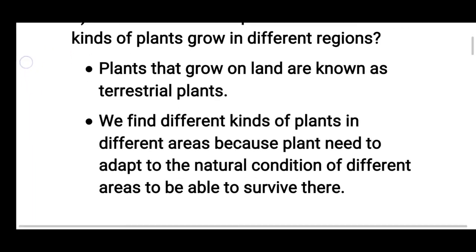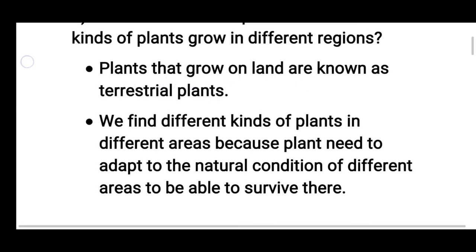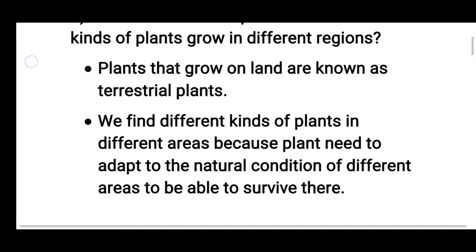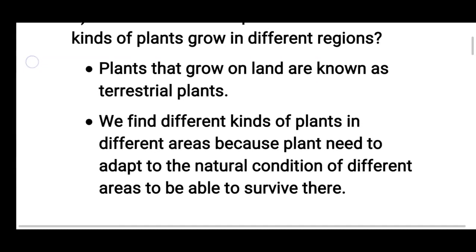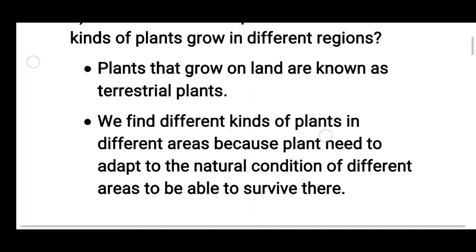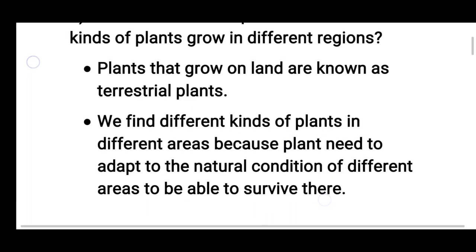So the answer is: plants that grow on land are known as terrestrial plants. जो plants land के ऊपर grow करते हैं, उन्हें हम कहते हैं terrestrial plants. We find different kinds of plants in different areas because plants need to adapt to the natural conditions of different areas to be able to survive there.